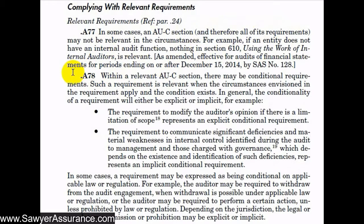There may also be cases where the section is relevant but a particular requirement might not be relevant, because the condition it mentions does not exist for this particular entity. This could be either explicit or implicit. For example, there's a requirement that under a limited scope audit the auditor has to modify the auditor's opinion, but if there's not a scope limitation, then we don't necessarily have to modify the opinion.